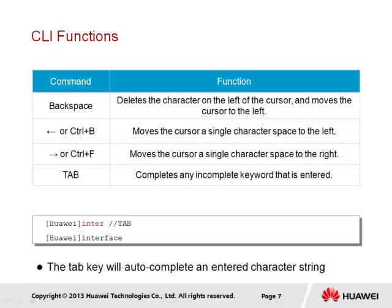Some other CLI functions include the Backspace key, which deletes the character to the left of the cursor and moves the cursor to the left, as with many other applications. The left arrow key and Control B perform the same function, moving the cursor a single character space to the left. The right arrow key and Control F perform the same function but to the right.